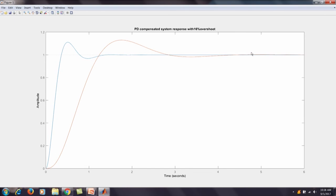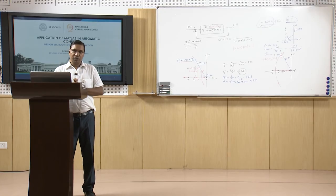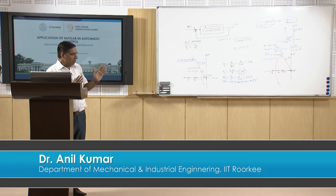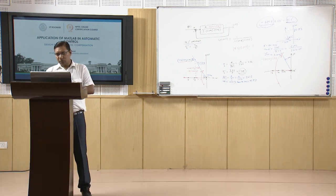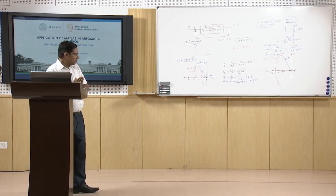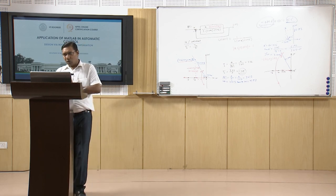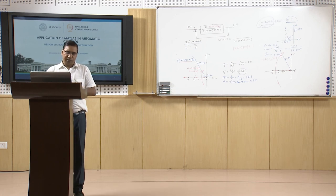This is the compensated system versus the uncompensated system. We have learned the theory of the PD controller and saw in this example how to carry out PD control design theoretically and then implement it using MATLAB code. These examples were taken from the book by Norman S. Nise, 'Control System Engineering'. Thank you for attending this lecture and see you in the next lecture.